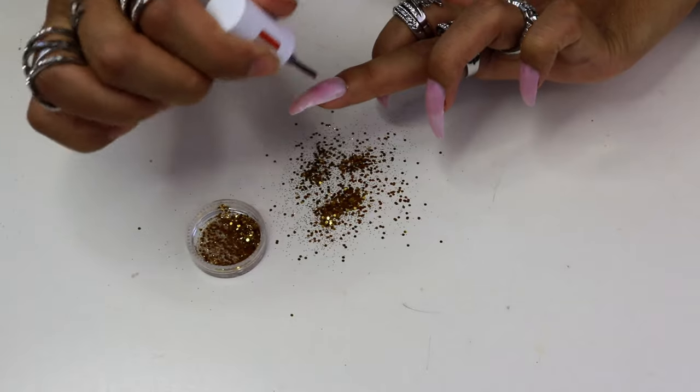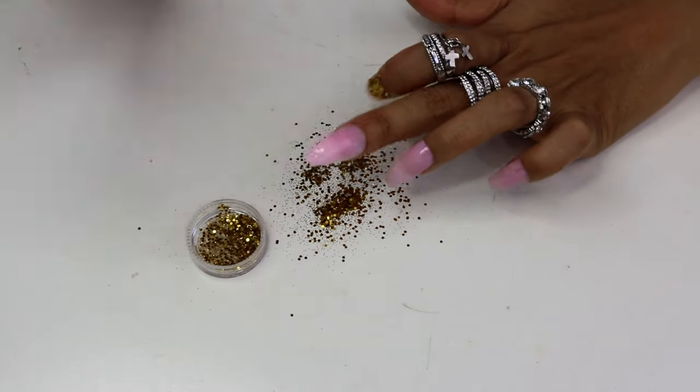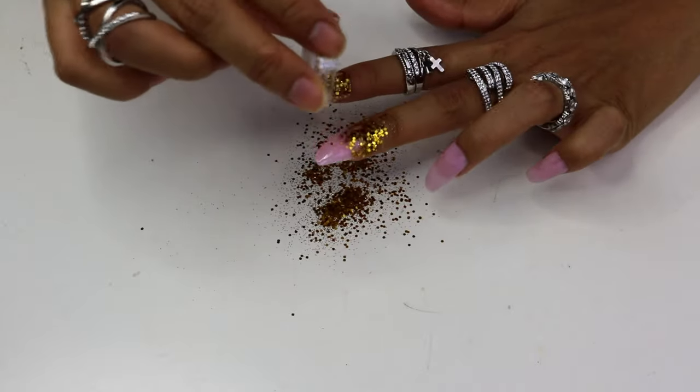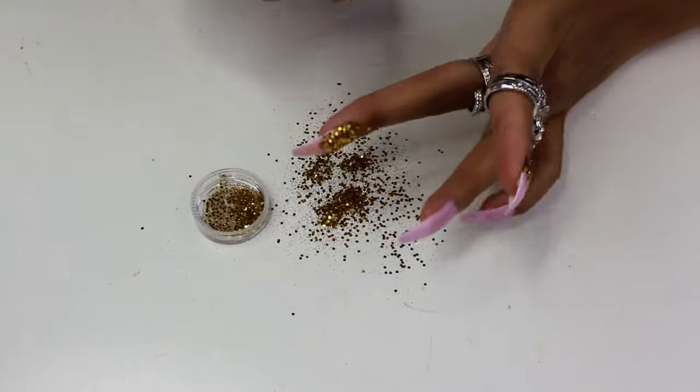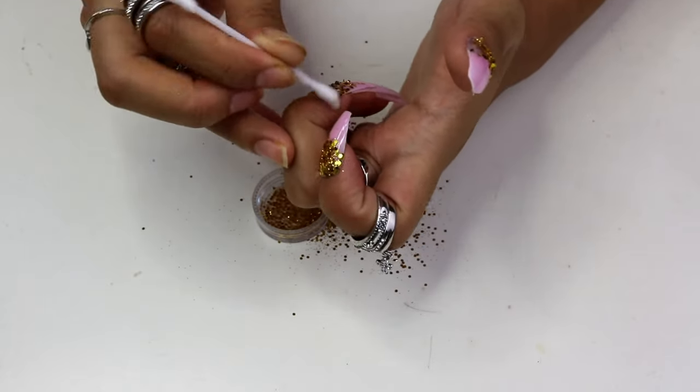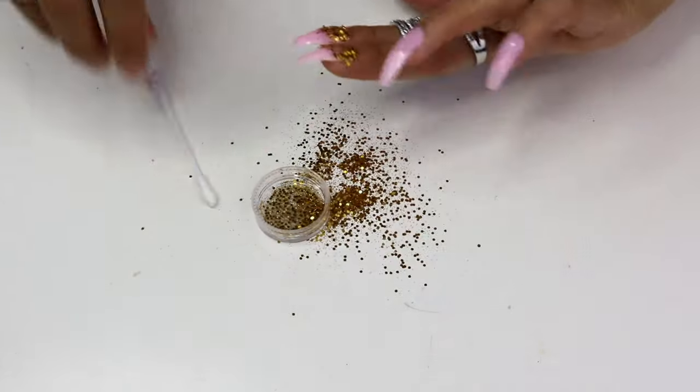But just to take this a little further, adding some glitters. For this I'm using the clear top coat and applying it halfway down, sprinkling the golden glitters over my nails and quickly dabbing off the excess. Don't forget to clean your edges using a cotton bud dipped in nail polish remover.